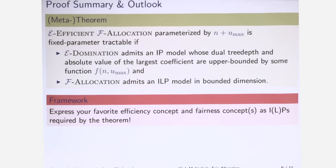Basically in this framework, you just take your favorite efficiency concept and you model it as an IP with bounded tree depth. That means basically that the constraints are not so much connected to each other. Then you take your favorite fairness concept and you model it as an ILP that is bounded in the dimension by the parameters that we are focusing on. And then you can just plug in those IPs and ILPs that you came up with to the meta-theorem, and you get a parameterized algorithm that works in this time.